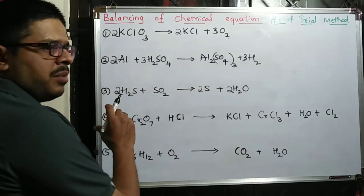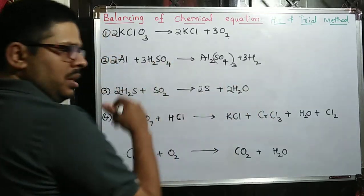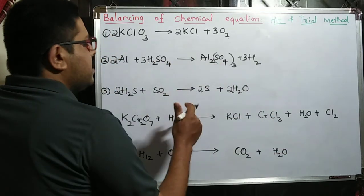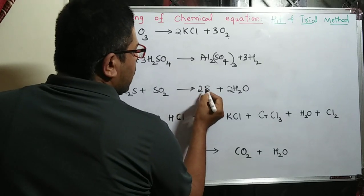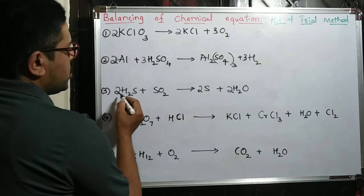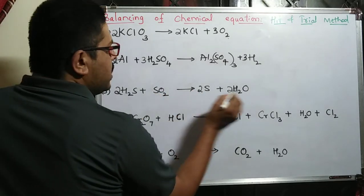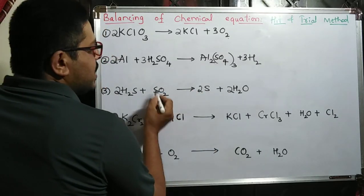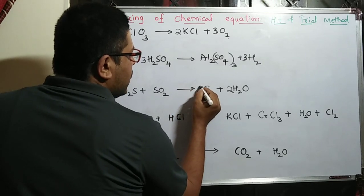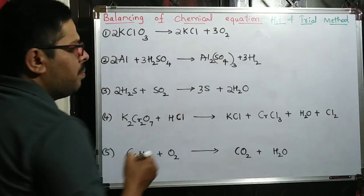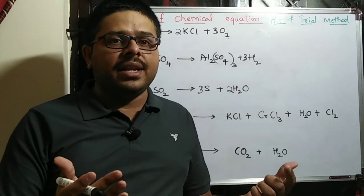In the hit and trial method, when something doesn't balance you add another number and try again. If it still doesn't balance, you add yet another number. This is the iterative process of balancing. Whatever number you write — it may be final or it may not be final. You may change it again in the further process.